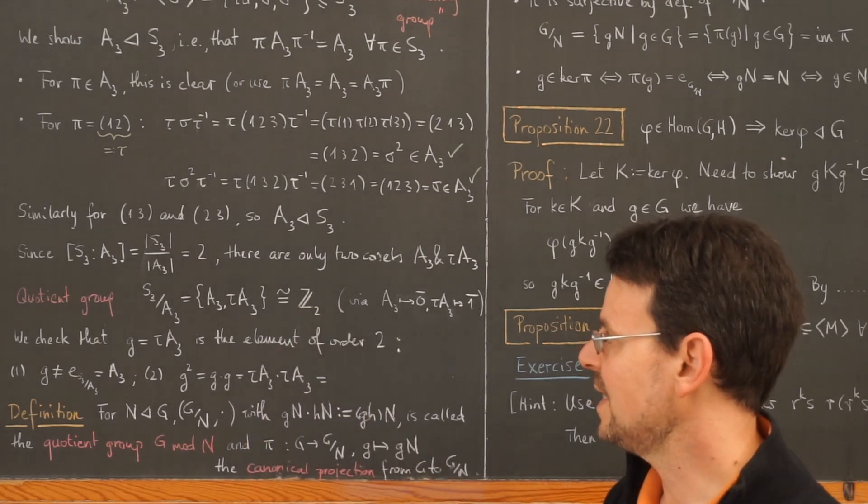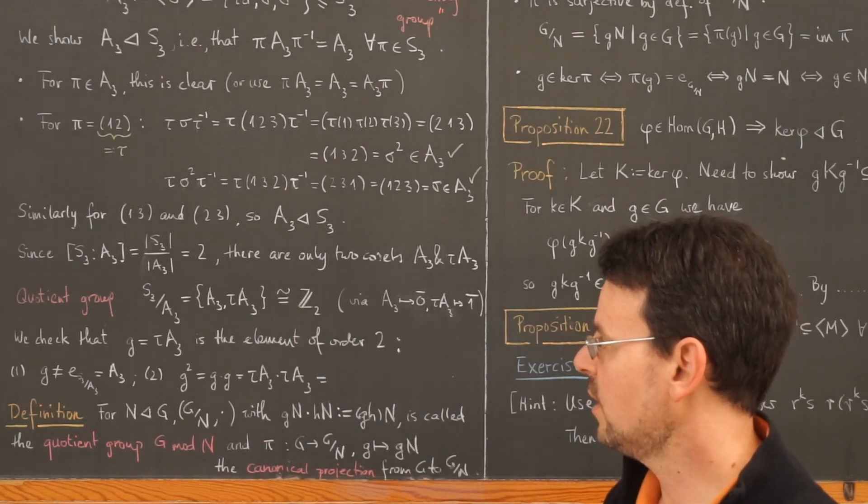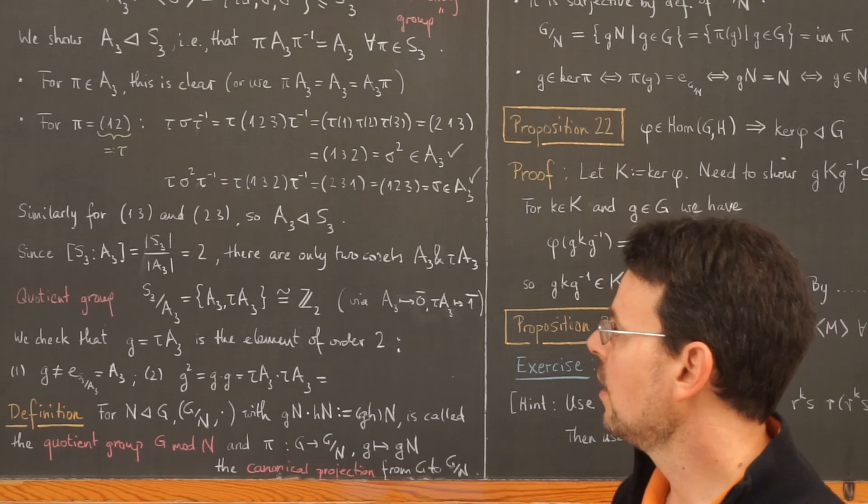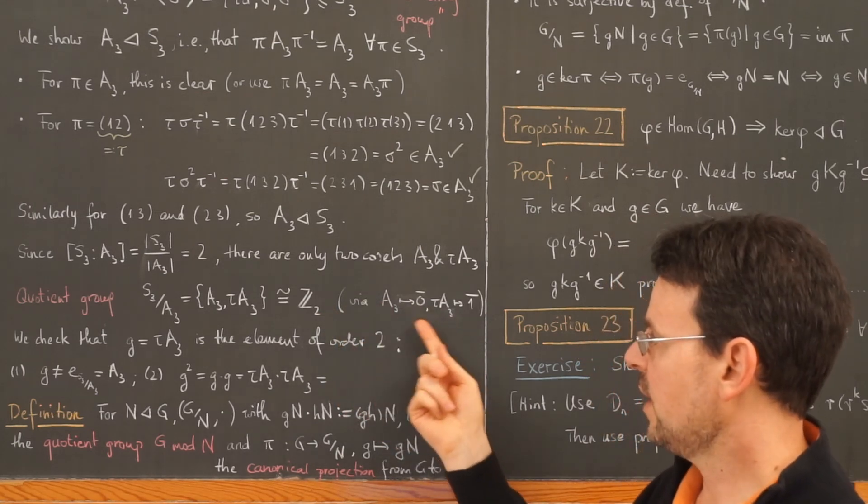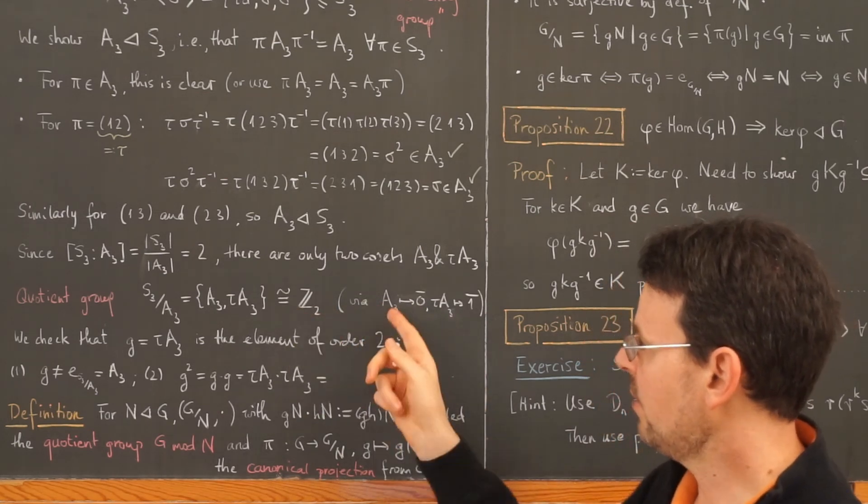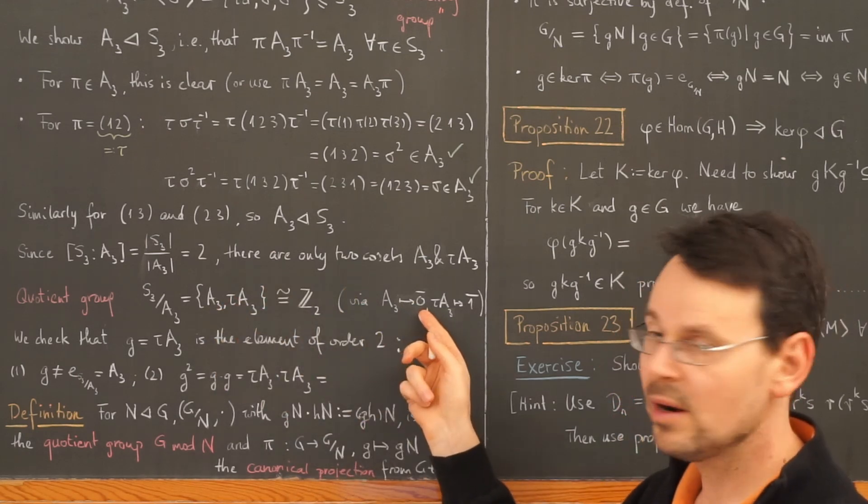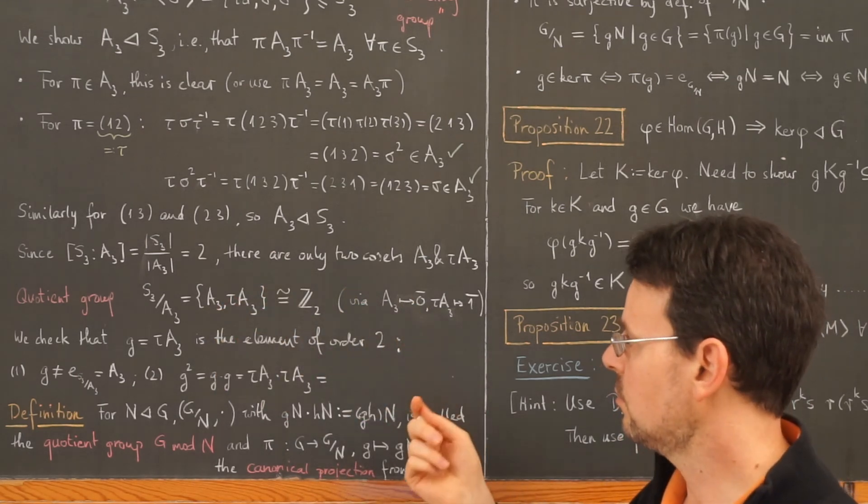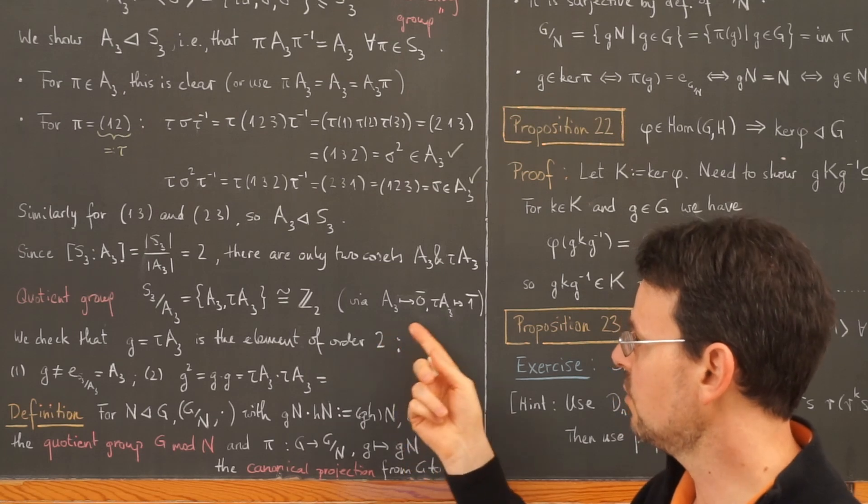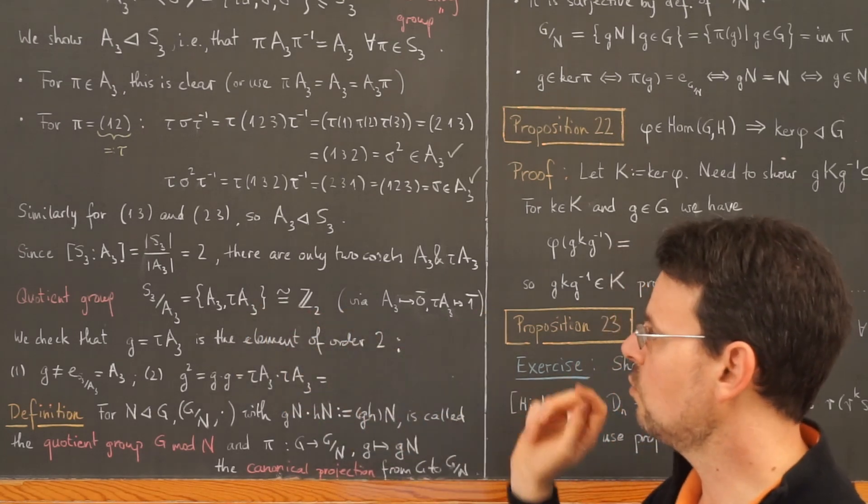Now there is only one group of order 2, namely Z sub 2, the integers mod 2, and here an explicit isomorphism would be: I map this element to 0 bar, the residue class of 0 mod 2, and this element to 1 bar.